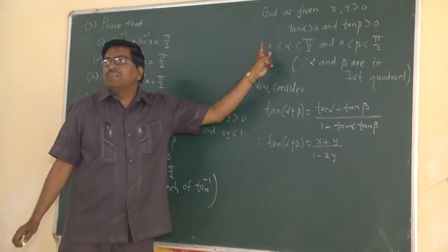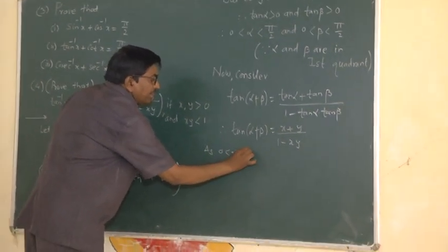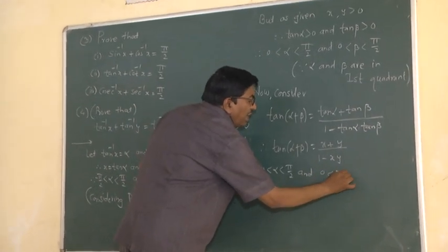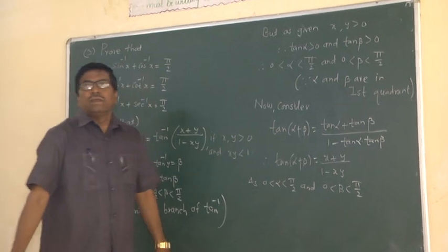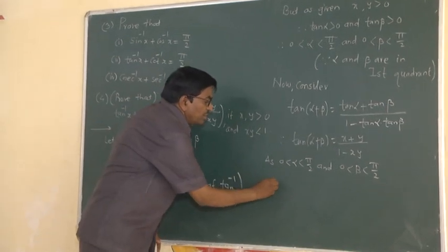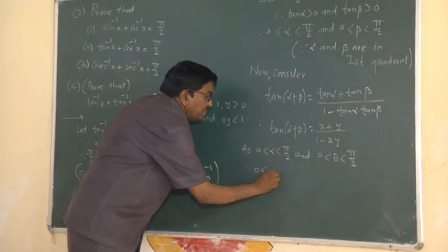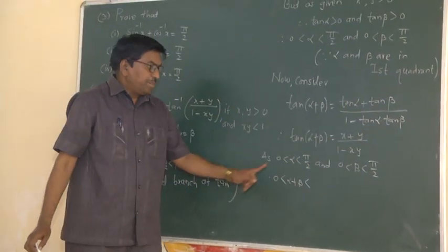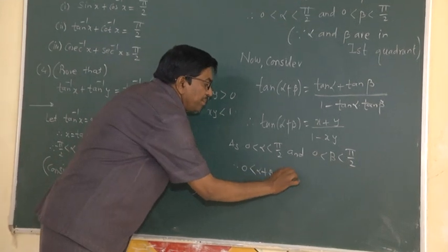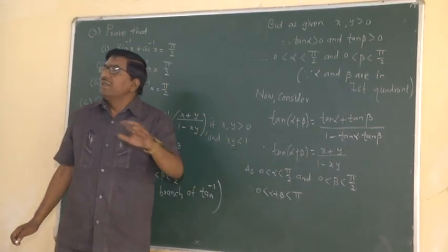Now, since alpha is greater than 0 and less than pi by 2, and similarly beta is greater than 0 and less than pi by 2, adding the two inequalities: 0 less than alpha plus beta, and alpha plus beta less than pi by 2 plus pi by 2, which equals pi. Therefore, alpha plus beta lies in the first or second quadrant.